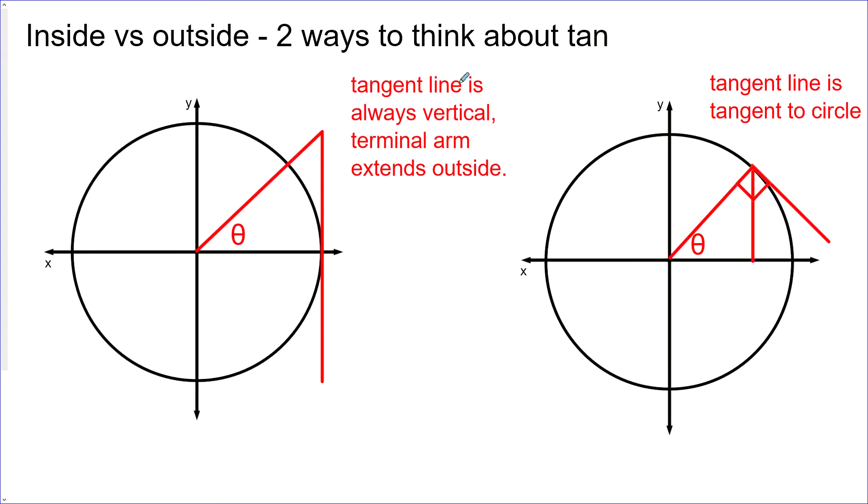There's two different ways to think about tangent on a circle and draw it and make questions for it. And I've seen them both ways, so you should be familiar with both of these scenarios. One I'll call inside, where the triangle remains inside the circle. And the other one is outside where the triangle extends outside the circle. They both have a tangent line, so let's look at the differences.